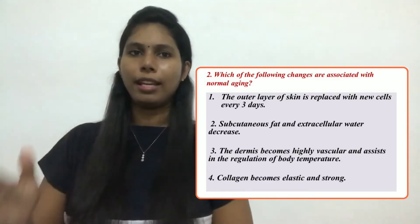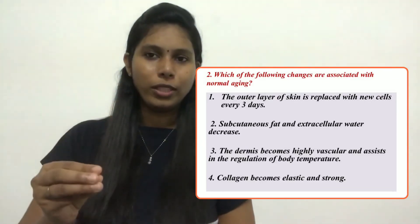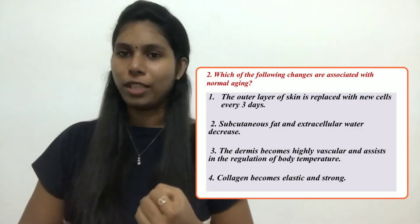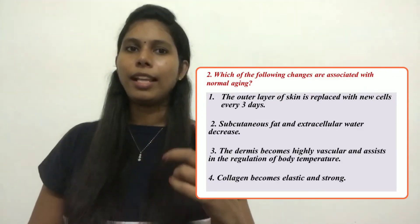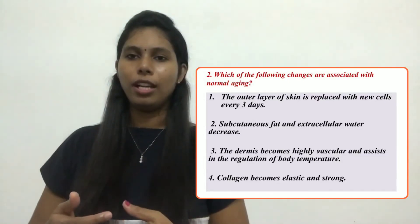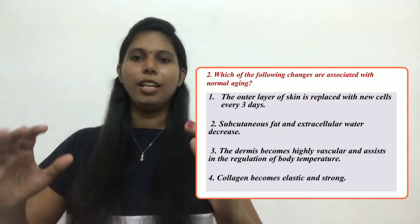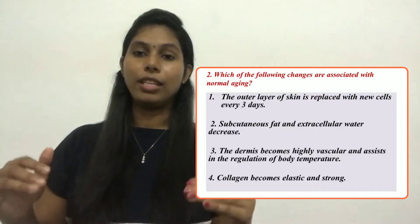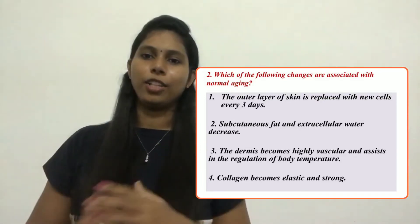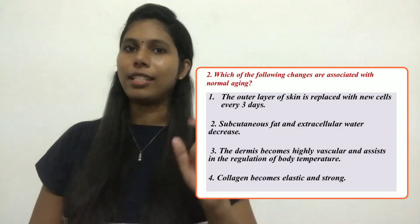For the first option — the outer layer replaced with new cells every three days — as people get older, the process of skin proliferation and epithelialization slows significantly compared to young adults, so we can eliminate that. For option three — the dermis becomes highly vascular and assists in temperature regulation — we know that elderly patients have decreased sensitivity to heat, which is why we take precautions with hot water baths. So that is not a correct option either; we can eliminate option three.